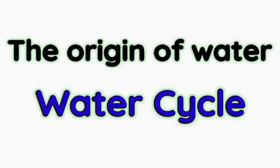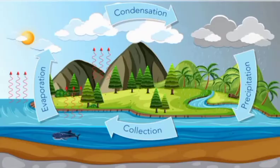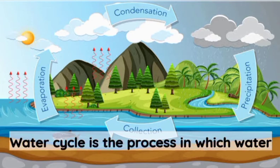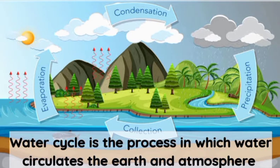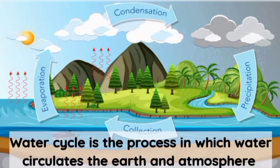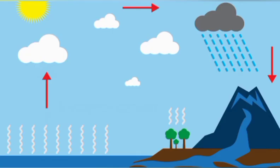Now we'll know about the origin of water — the water cycle. It's the process in which water circulates the earth and atmosphere. There are primarily four parts to the water cycle: evaporation, condensation, precipitation, and collection. Now we'll know one by one about each part, starting with evaporation.